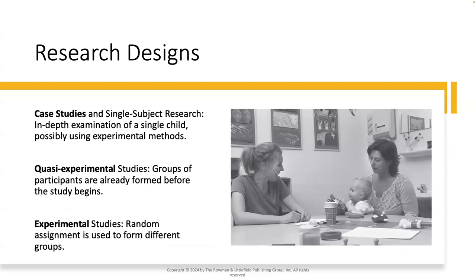There are three main research designs we're going to be discussing: case studies, quasi-experimental studies, and experimental studies. Case studies are single-subject research — an in-depth examination of a single child, possibly using experimental methods. For example, one-on-one interventions with children with autism spectrum disorders.